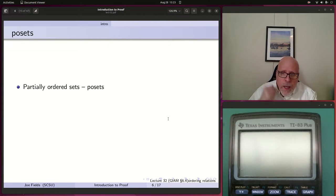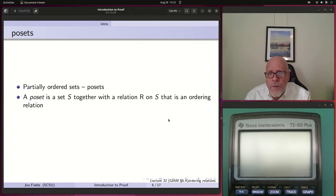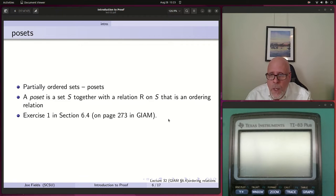Remember when we did digraphs, directed graphs? Here's another one of these contracted words. Rather than saying partially ordered set over and over again, they just say poset, P-O-S-E-T. A poset is a set S together with a relation R on S that is an ordering relation. Make sure we're back to my standard, which means that ordering relation is reflexive.